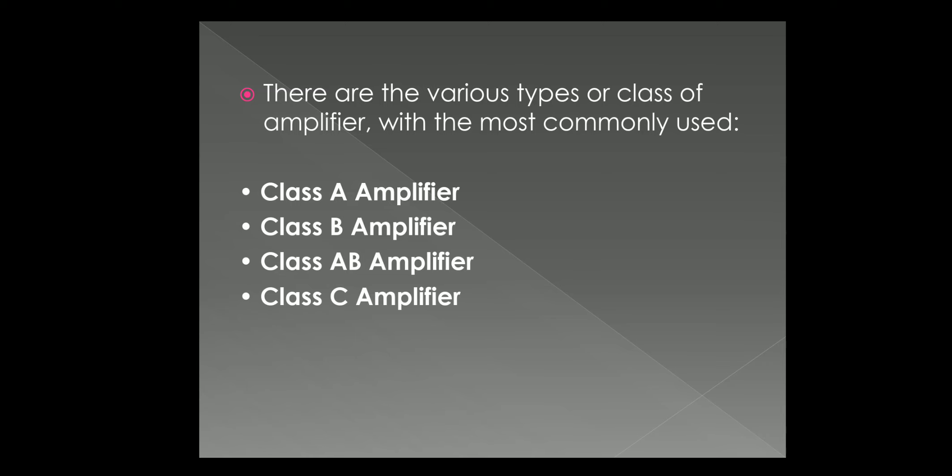The last one is Class C amplifier. It is the most inefficient amplifier class and only a very small portion of the input signal is amplified through. Therefore, the output signal bears very little resemblance to the input signal.